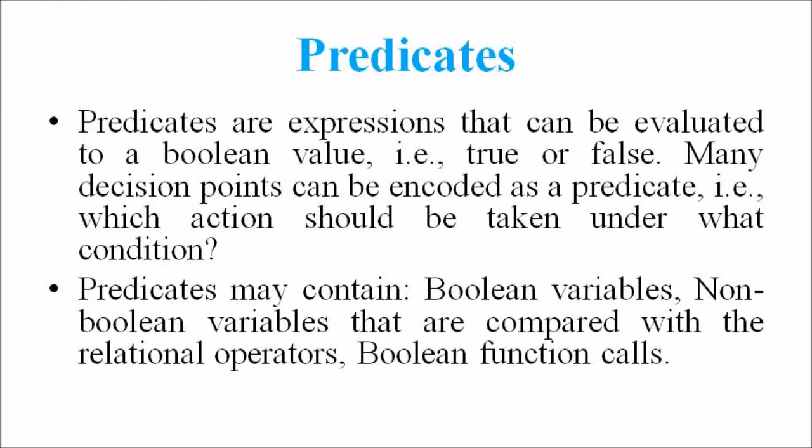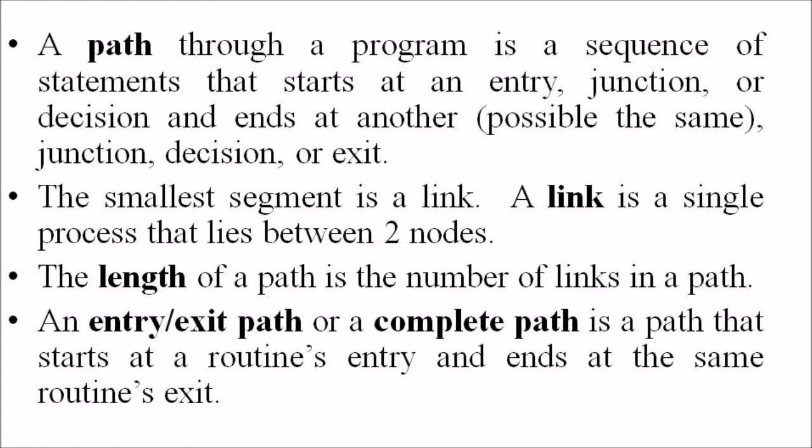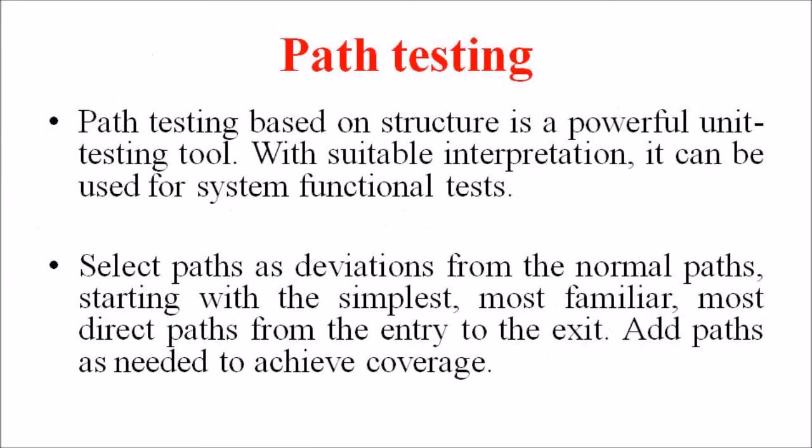When considering a predicate, we should think about the path. A path through a program is a sequence of statements that starts at an entry junction or decision and ends at another junction, decision, or exit point. A path may pass through several junctions, processes, or decisions one or more times. A path consists of different segments, and the smallest segment is known as a link — a single process that lies between two different nodes. The length of the path is the number of links in a path.